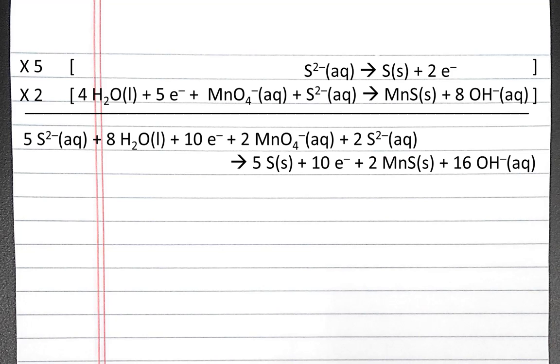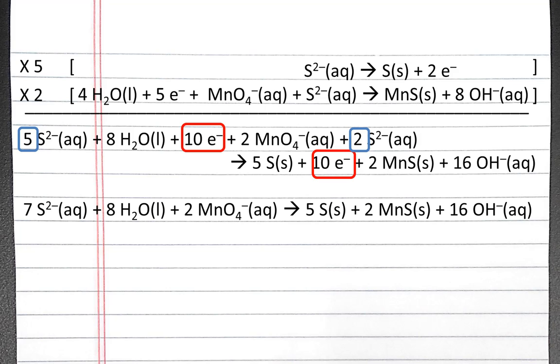When we multiply these equations out and add them together, we'll get what's shown below. We can cancel out anything that shows up on both sides. So that's going to be our 10 electrons. We can also combine our 5 sulfide ions and 2 sulfide ions. So our equation after combining like species and eliminating species that show up on both sides is shown here.